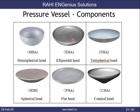The types of heads include hemispherical, ellipsoidal, and torispherical heads. From hemispherical towards torispherical, the depth of the head decreases. As the depth reduces, the required thickness increases for the same diameter, material, and pressure. Therefore, the hemispherical head has the lowest required thickness, while the torispherical head has the highest.